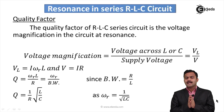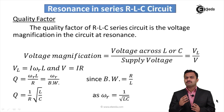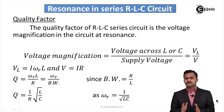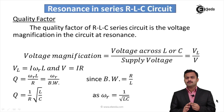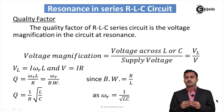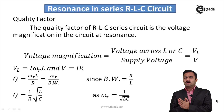A series RLC circuit at resonance is also called an acceptor circuit, because current is accepted at its maximum level at resonance. If you know R, L, and C, you can determine all the key resonance parameters: resonating frequency, bandwidth, lower cutoff frequency, upper cutoff frequency, and quality factor. Resonance is required in order to transfer maximum power from supply to the load.